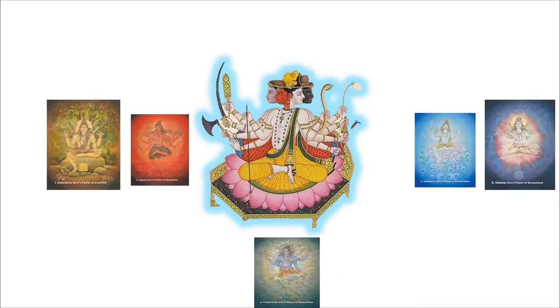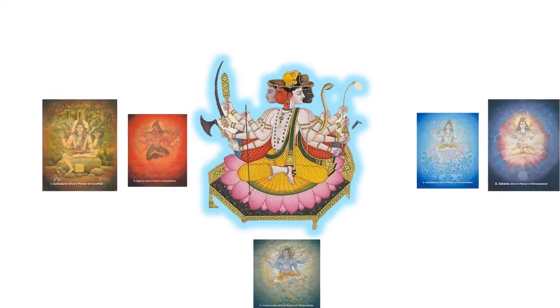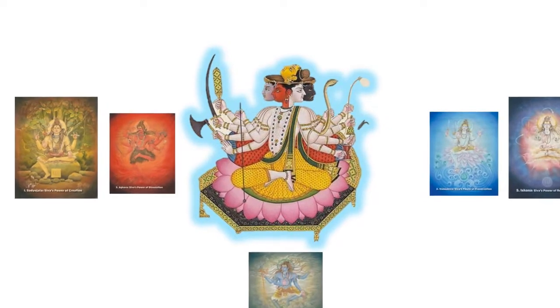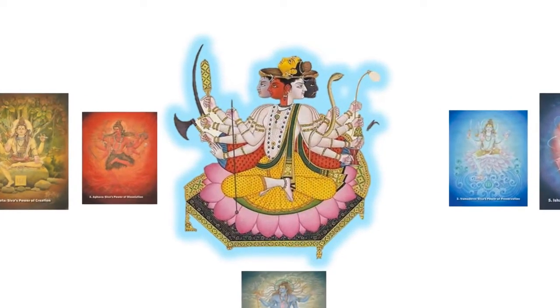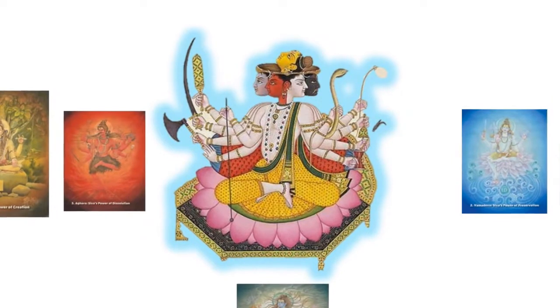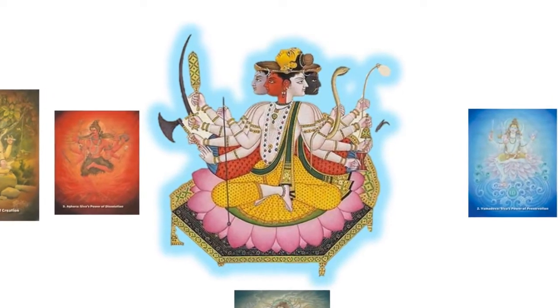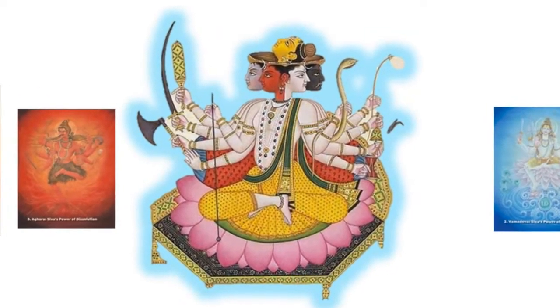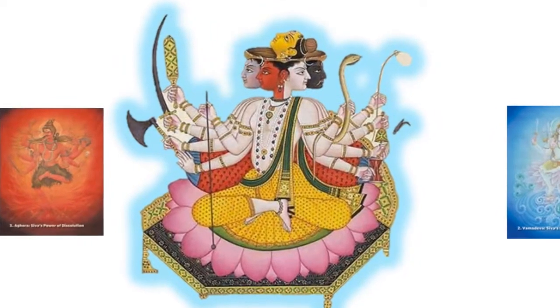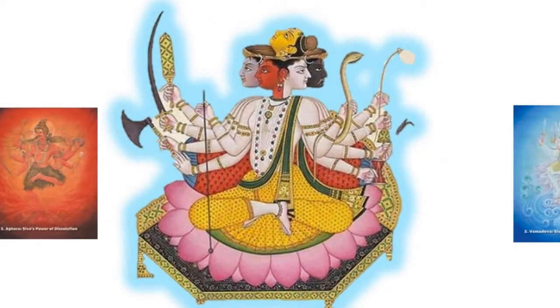Lord Shiva is a five-faced god. These five faces represent the five different forms of Lord Shiva, representing the five different directions, five elements, five divisions of time, five different energies, five colors, five senses of the humans, etc. The five forms are Sadyojata, Vamadeva, Aghora, Tatpurusha and Ishana.